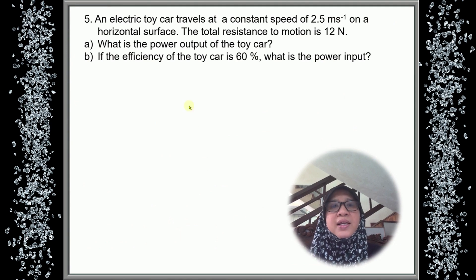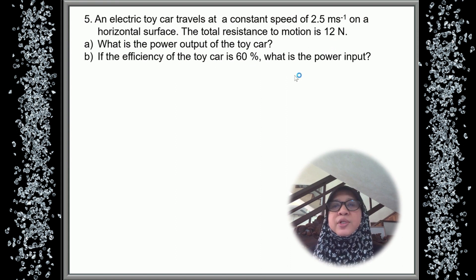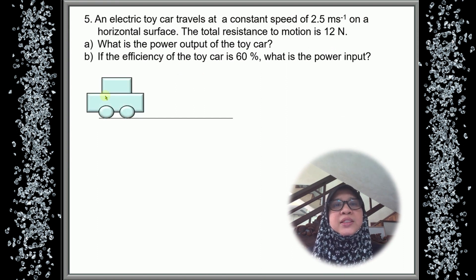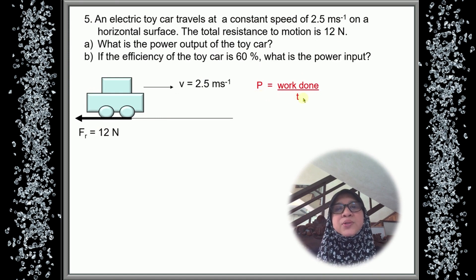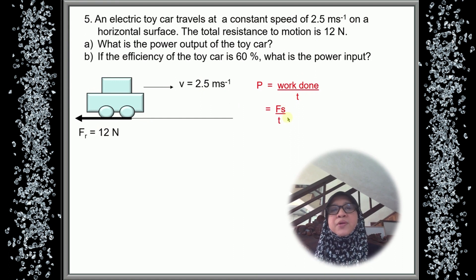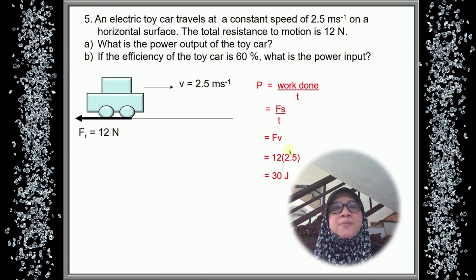Question 5, the last question: An electric toy car travels at a constant speed of 2.5 meters per second on a horizontal surface. The total resistance to motion is 12 newtons, which is the frictional force. What is the power output of the toy car? The car travels at 2.5 m/s with a frictional force of 12 N. Using power equals work done divided by time, work done is force times distance, but distance is not given. We use S over time as velocity. So F times v: 12 times 2.5 gives 30 watts.